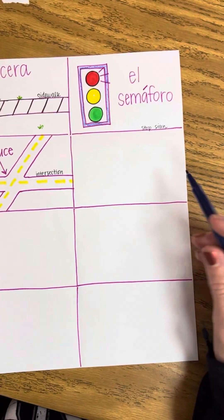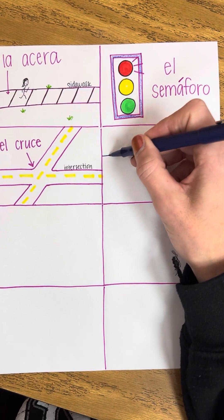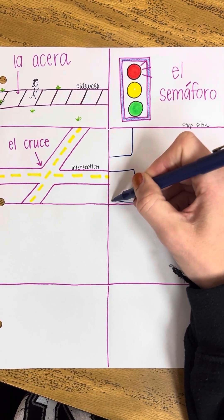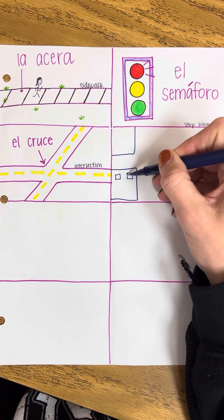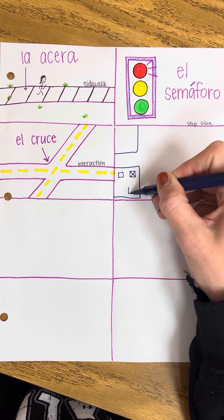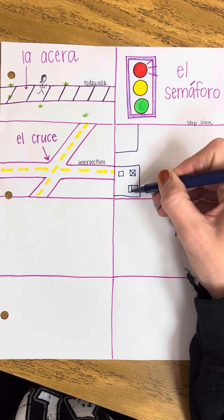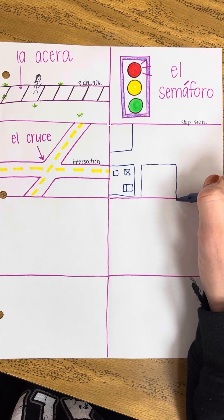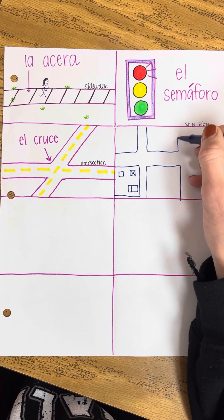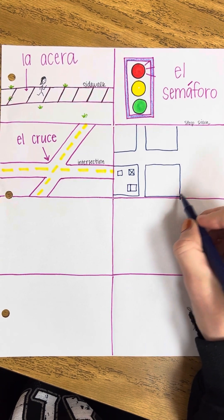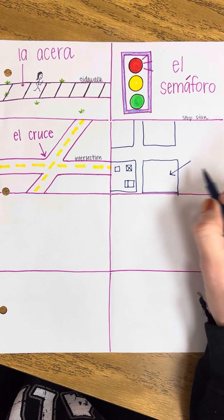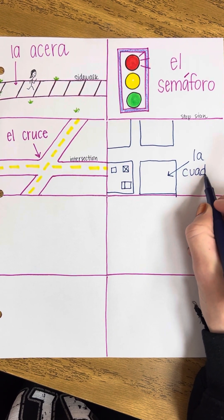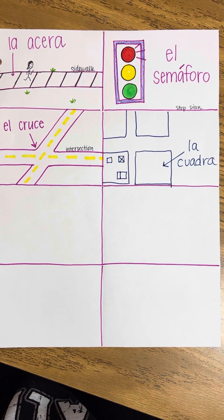The next thing we're going to draw is a city block, and we're going to do it from an aerial view. So we're going to draw a street with houses, maybe draw the roof line on the houses. The entire block — the word square is cuadro, so if you make it feminine, la cuadra, that is a city block. La cuadra.